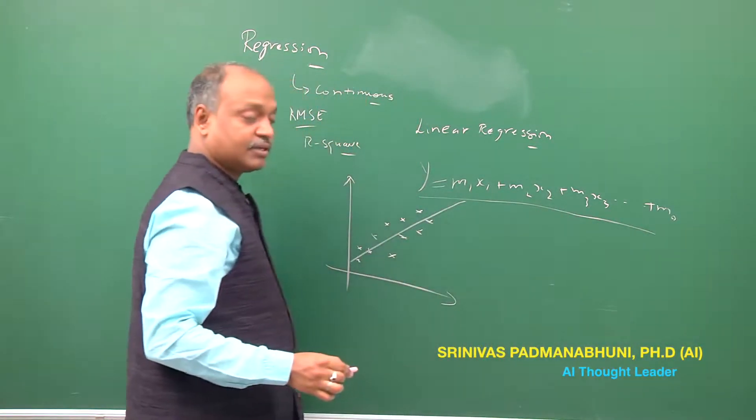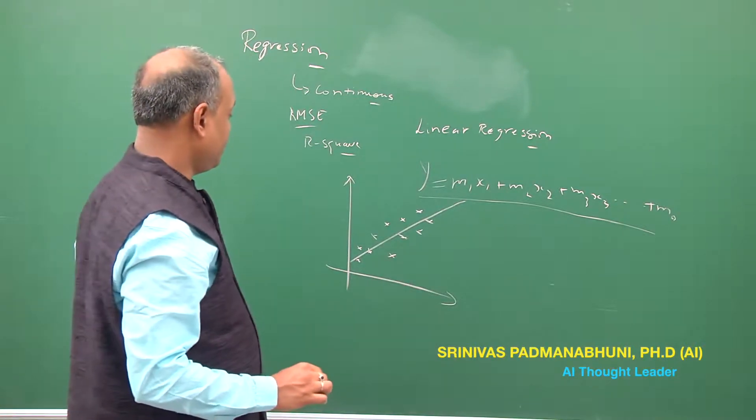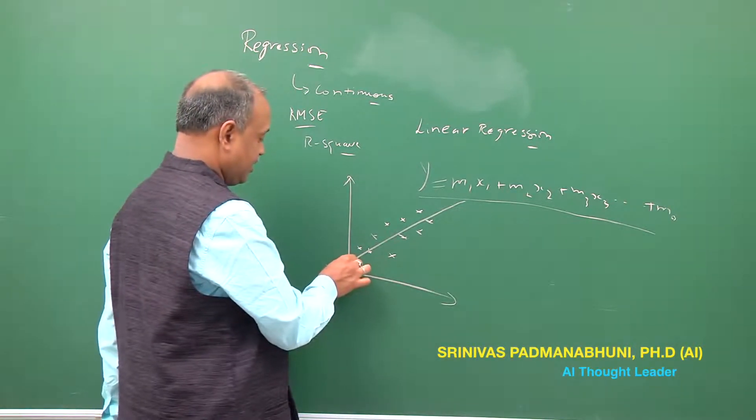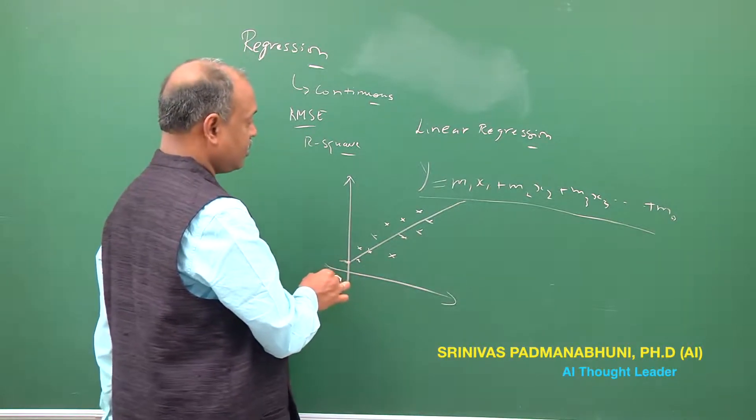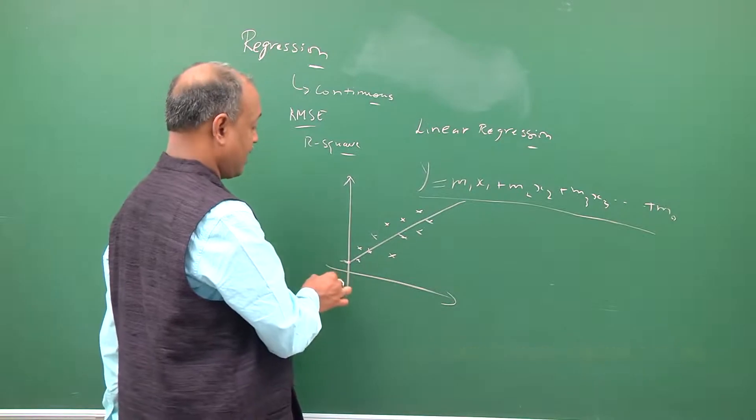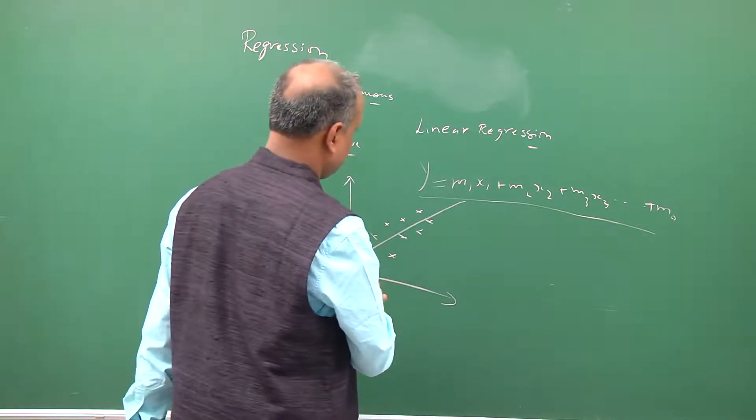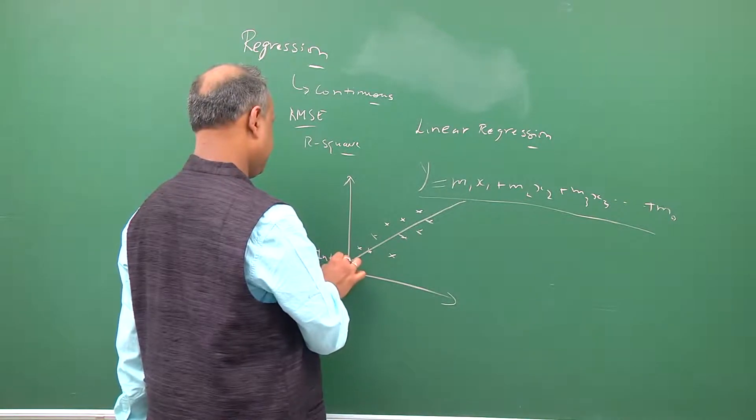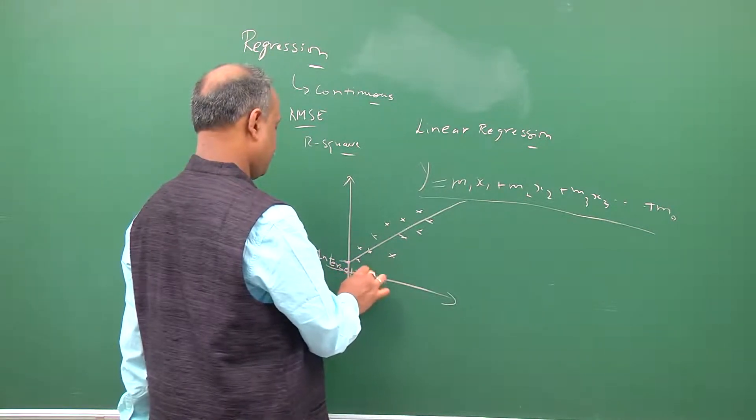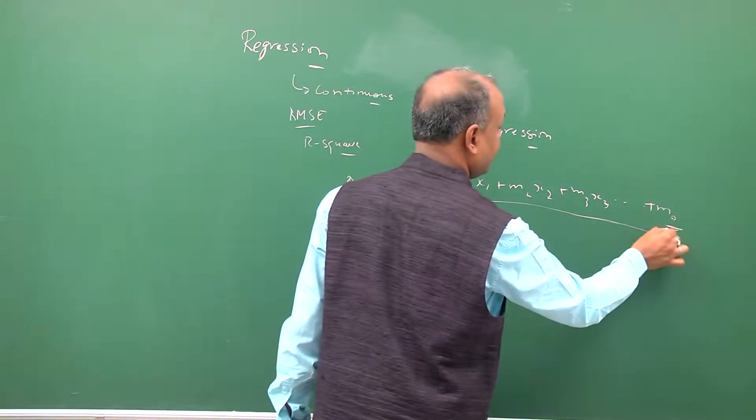Here the point where it touches the origin or it touches the x equal to 0 is called the intercept.